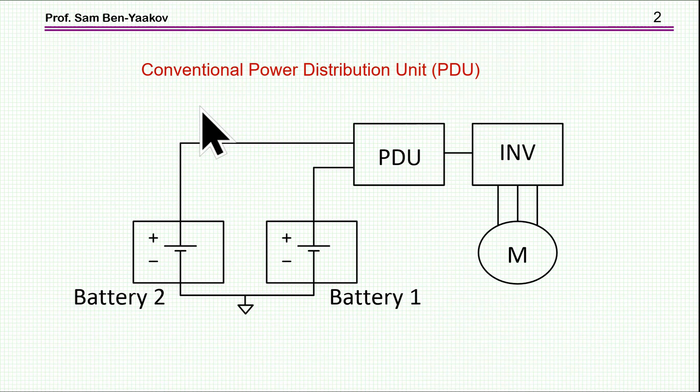Now the conventional configuration of a power distribution unit looks like this. Usually there are going to be two batteries or more, but usually it will be two batteries. This is the power distribution unit and here is the load.